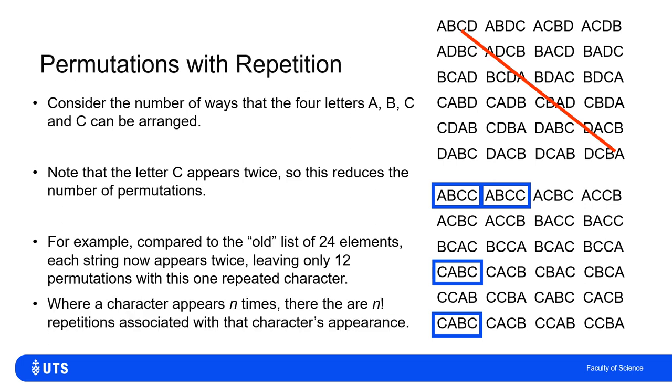And in general, if I've got a character which is repeated n times, then there's n factorial repetitions associated with that. Here, the only repetition is C appearing twice. So the effect of that is to reduce the count by a factor of two factorial, or a factor of two, i.e., halving it.